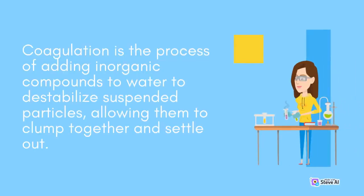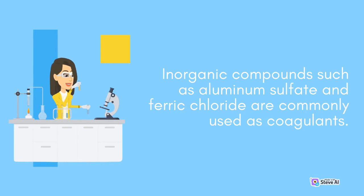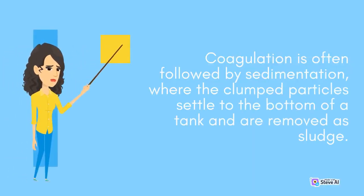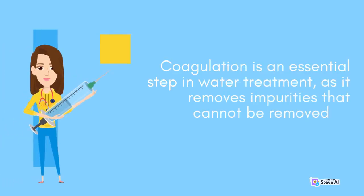Coagulation is the process of adding inorganic compounds to water to destabilize suspended particles, allowing them to clump together and settle out. Inorganic compounds such as aluminum sulfate and ferric chloride are commonly used as coagulants. Coagulation is often followed by sedimentation, where the clumped particles settle to the bottom of a tank and are removed as sludge. Coagulation is an essential step in water treatment, as it removes impurities that cannot be removed by filtration alone.